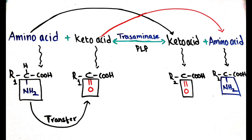The amino group is transferred from the amino acid to a keto acid, so that the amino acid which transfers the amino group is converted into a keto acid, and the keto acid which is accepting the amino group is converted into an amino acid.